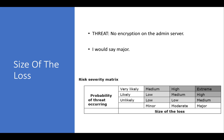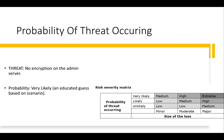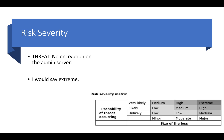Why major? If someone gets access to the unencrypted admin server, they have information on every past and current student, teachers, the principal, payroll, the school's bank details — everything. The loss doesn't have to mean data is deleted; even someone just having access constitutes a data loss. So I'd say the size of loss is major. And if the probability is very likely and the size of loss is major, the risk severity would be extreme.